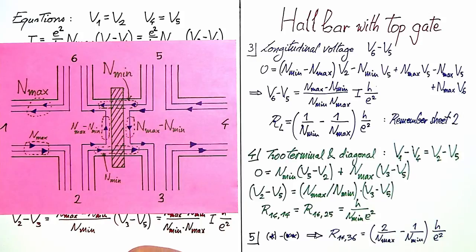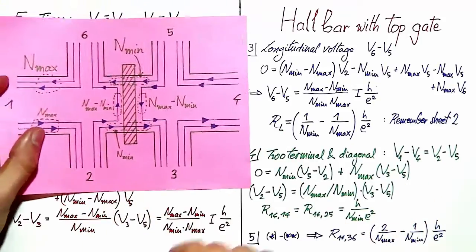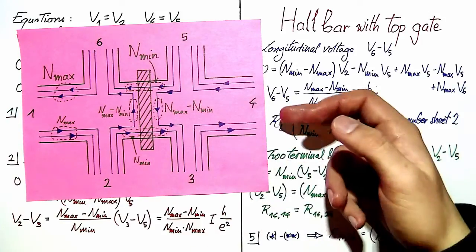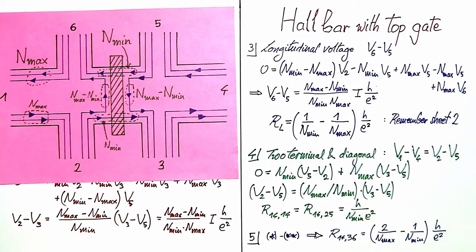If you study a sample with a Hall bar structure and in the middle a nanostructure where the electron density is typically lower, giving a smaller effective filling factor, you have exactly this situation. If you want to study n_min, the only formula where n_min appears alone is the two-terminal and one diagonal resistance. For a four-terminal measurement avoiding cabling resistance, you must use this specific diagonal. Pay attention to the direction of your edge channels — meaning the direction of your B-field — so you do not measure the other diagonal where you see a mix of n_max and n_min.